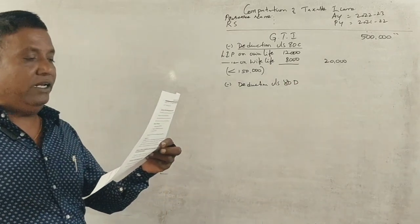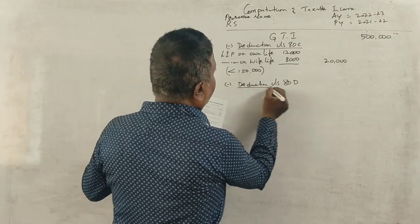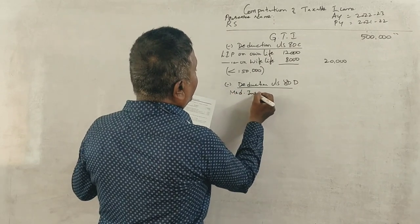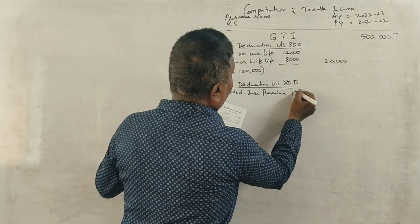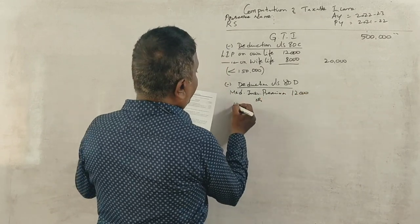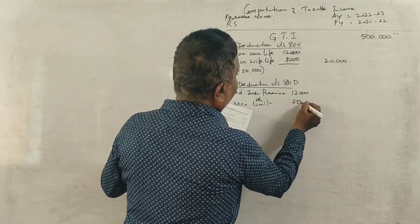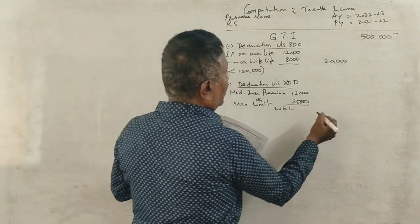Next is medical insurance premium of 12,000. So medical insurance premium is 12,000 or maximum limit of 25,000, whichever is lower. Whichever is lower: 12,000.